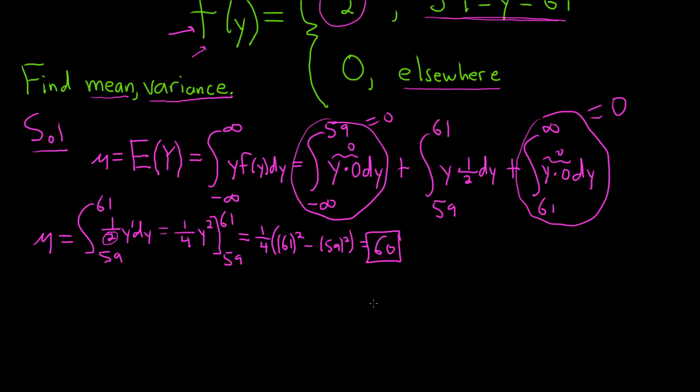The second part is to find the variance. The variance of capital Y is given by the following formula: it's the expected value of y squared minus the expected value of y, and then we square the whole thing. We simply have to work out this piece here, and then we can use this formula.